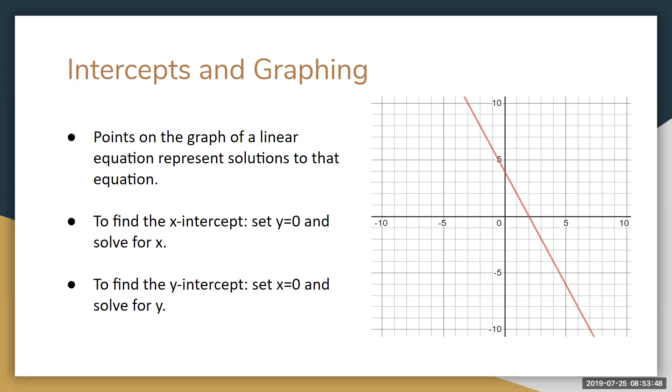When we deal with graphing lines, often we're interested in the x and y-intercepts. The x-intercept is the place where the graph crosses the x-axis. If you look at this graph over here, you can see that it crosses the x-axis at about 2. So we'd say the x-intercept is 2 or the point (2,0).